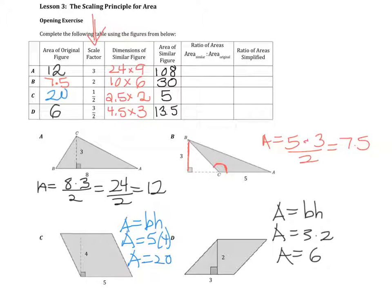Now if we write the areas in terms of a ratio, the area of the similar figure 108 to the original 12, 30 to 7.5, 5 to 20, and 13.5 to 6. When we simplify the ratio of the areas, 108 divided by 12 is equal to 9. 30 divided by 7.5 is equal to 4. 5 divided by 20 is 1 fourth, and 13.5 divided by 6 gives me 27 over 12, which is equal to 9 fourths.